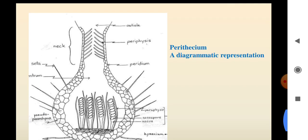Here you can see the structure of perithecia. The perithecia wall is made up of pseudoparenchymatous tissue. This structure is made up of a paraphysis, ascospores, and hymenium.